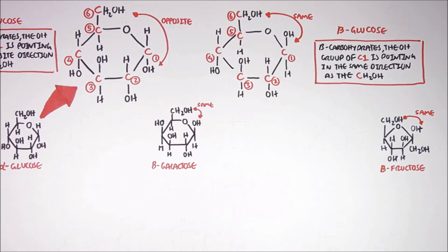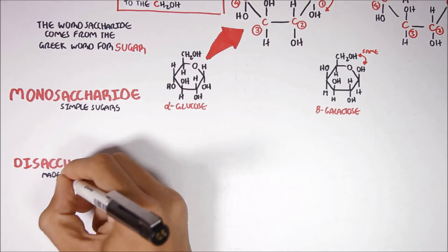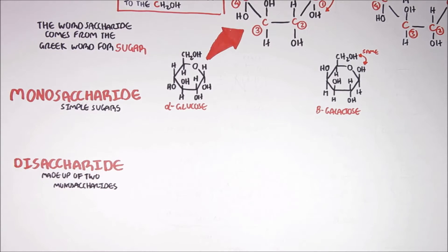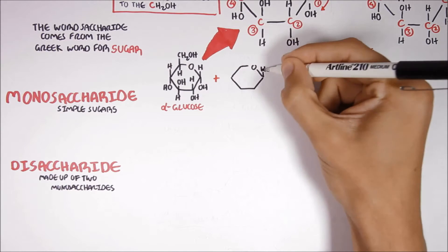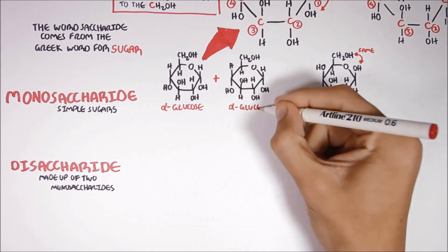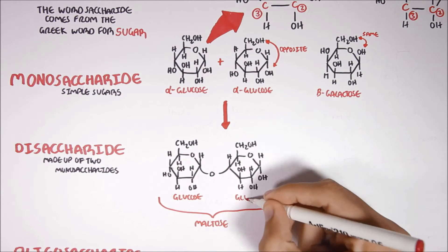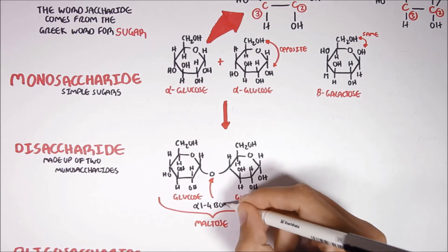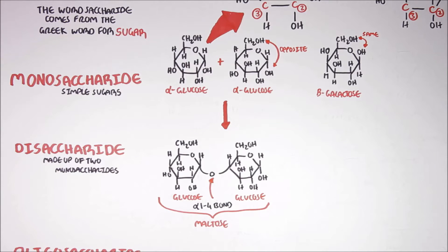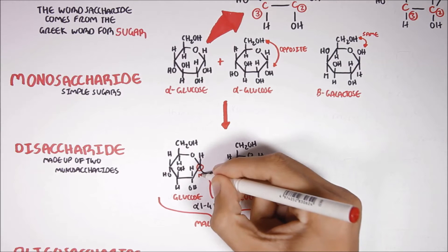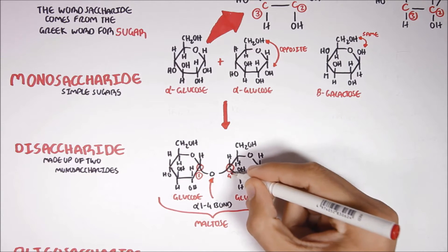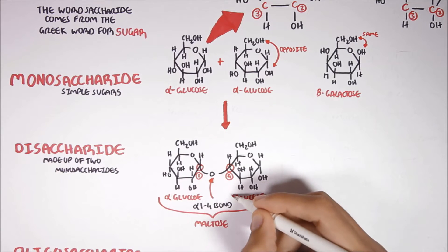So I hope you understood the structure of the three major monosaccharides in the human diet. Now let's look at disaccharides. Disaccharides are made up of two monosaccharides. For example, a glucose molecule and another glucose molecule can form a bond with each other. This new disaccharide is called maltose — two glucose molecules linked together by an alpha-1,2,4 glycosidic bond. It's called alpha-1,2,4 because carbon number one of this glucose and carbon number four of the other glucose are involved in the linking process, and it's called alpha because both glucose molecules are in an alpha configuration.